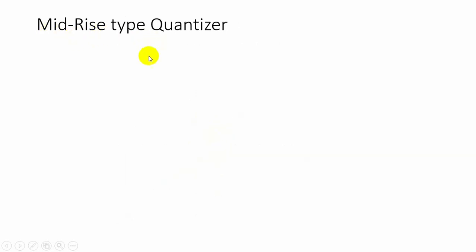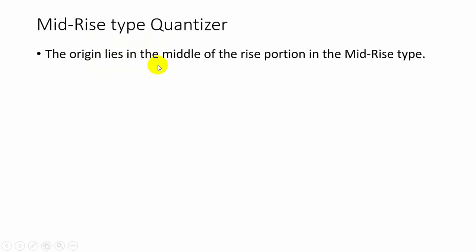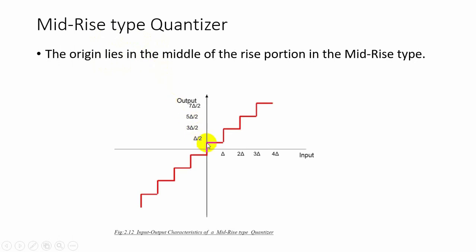In mid-rise type quantizer, the origin lies in the middle of the rise portion of the staircase-like graph. Consider step size delta equal to 1: if the input is 0, the output is 0.5 or minus 0.5. If the input is between 0.1 and 0.9, the output is 0.5. If the input is 1, the output is 0.5 or 1.5.